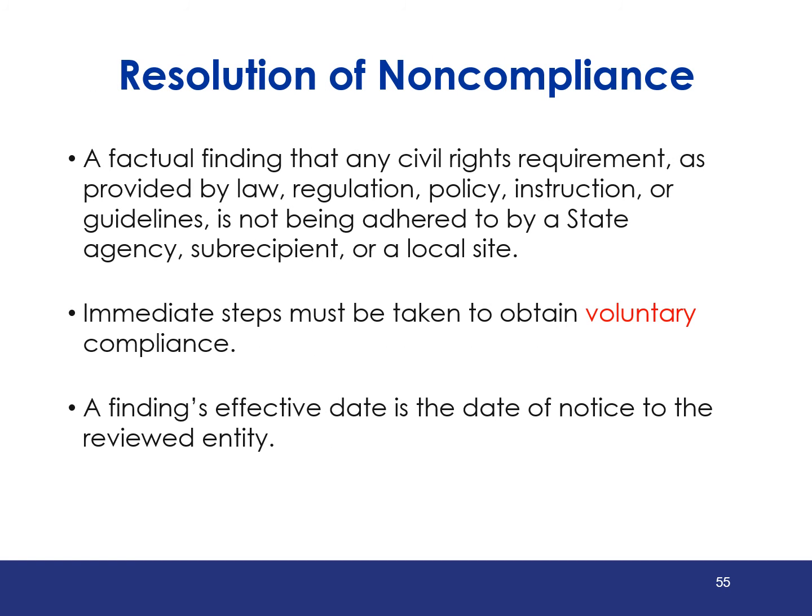A factual finding that any civil rights requirement, as provided by law, regulation, policy, instruction, or guideline, is not being adhered to by a state agency, subrecipient, or local site, requires immediate action to achieve voluntary compliance. The date on which the reviewed entity is notified is the finding's effective date. An acceptable corrective action plan must be submitted, and failure to respond or correct the finding may result in suspension or termination of financial assistance.